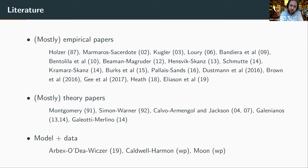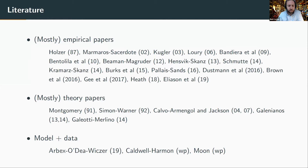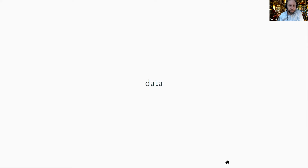Ben briefly shows a literature slide, noting there are mostly-empirical papers (with toy models), mostly-theory papers, and very few serious modeling exercises designed to fit the data well. He highlights a 2019 IER paper by David Wixer and coauthors as an exception, and notes their paper aims to be in the group that develops both data and model simultaneously. The data comes from the job search supplement to the SCE — five or six years of data capturing a wide cross-section of the population and occupations.